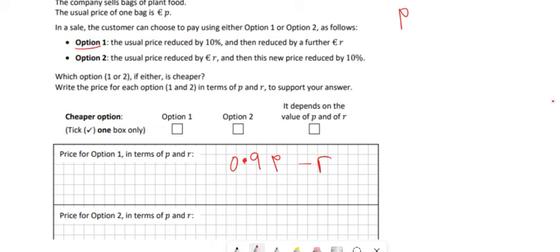For option two, the usual price reduced by r, and then this new price reduced by the 10 percent. So what we're doing here is we're doing p take away r, and then we're reducing that by 10%, so we're taking 10% off that. So that would be 0.9 multiplied by all of that, because that's 10% off of the p minus r.